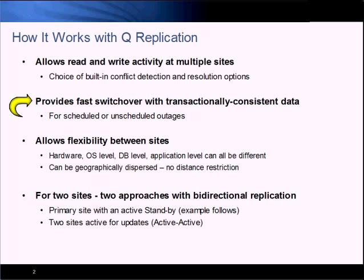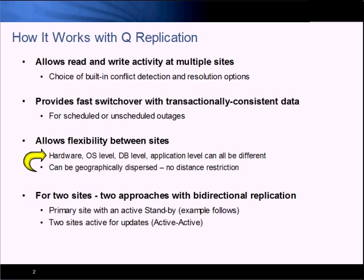Next, QReplication allows a fast switchover from one site to another for either planned or unplanned outages. You also have considerable flexibility in how you set things up. For example, you don't need to have the same hardware, the same operating system, or the same database and application levels at all sites involved in replication.